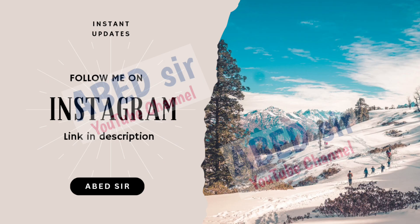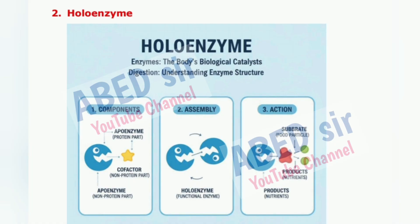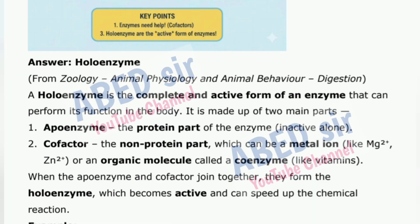Next Important Short Question 2: Holoenzyme. A holoenzyme is the complete and active form of an enzyme that can perform its function in the body. It is made up of two main parts: 1. Apoenzyme — the protein part of the enzyme, inactive alone. 2. Cofactor — the non-protein part, which can be a metal ion like Mg²⁺ or Zn²⁺.